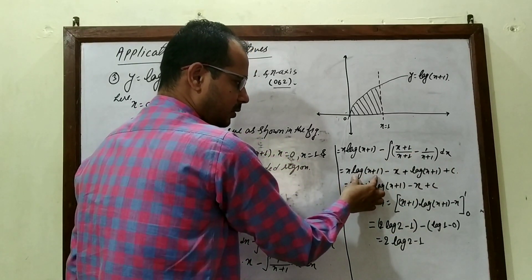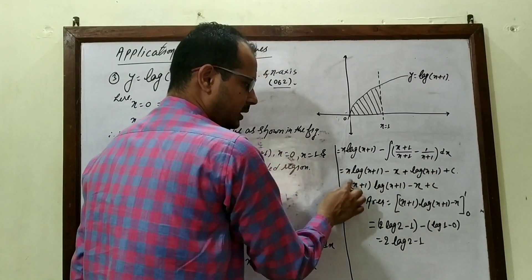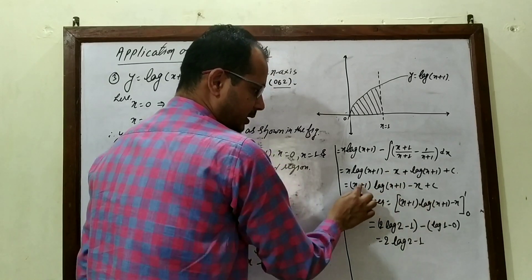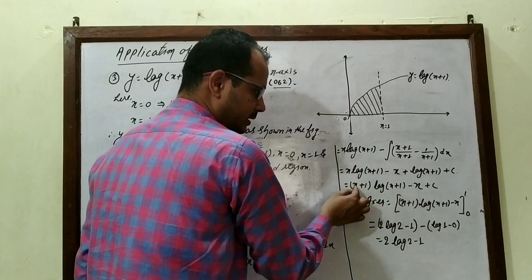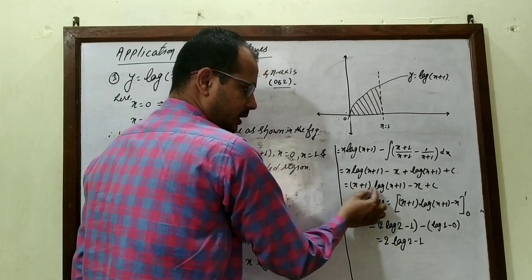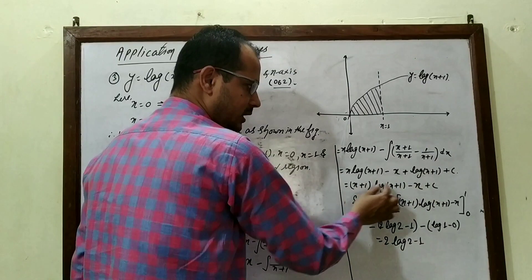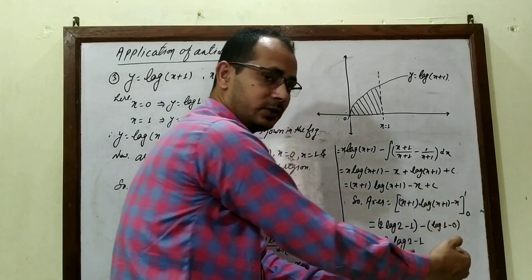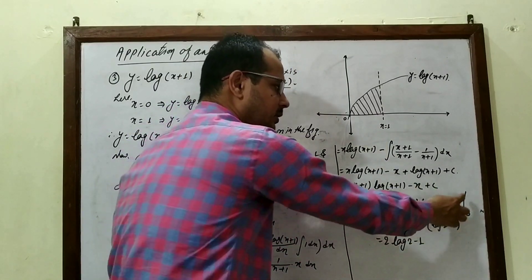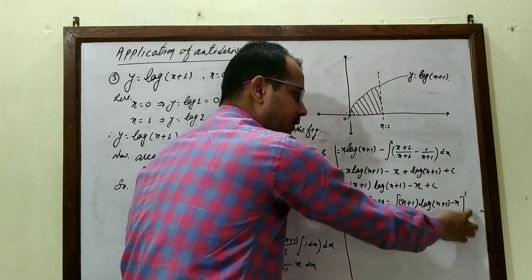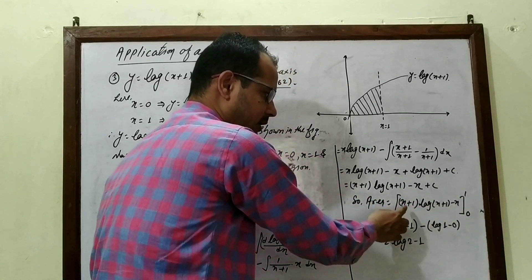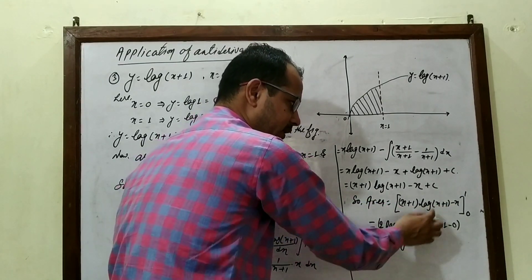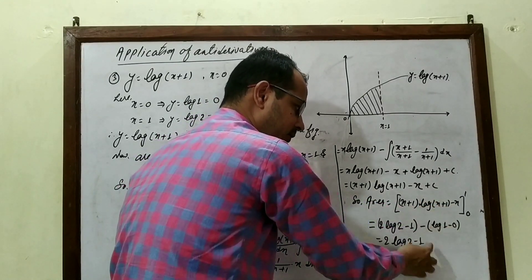We can factor: log(x+1) is common, leaving (x+1), minus x. So integral = (x+1)·log(x+1) − x + C. Now evaluating the definite integral from 0 to 1: at x=1: 2·log2 − 1; at x=0: 1·log1 − 0 = 0. Required area = 2log2 − 1 square units.